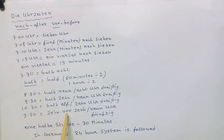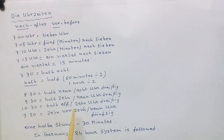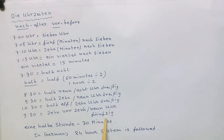Zehn vor zehn — ten minutes before ten. Or neun Uhr fünfzig — nine fifty. In Germany, the twenty-four hour system is followed, so you can follow the twenty-four hours system.